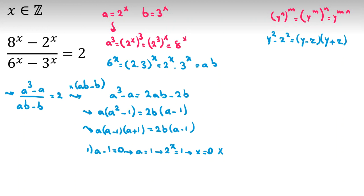Now let's consider second case. a minus 1 is not 0. So if we call this one a star, we use a star and divide both sides by a minus 1, then we have a times a plus 1 equal to 2b.